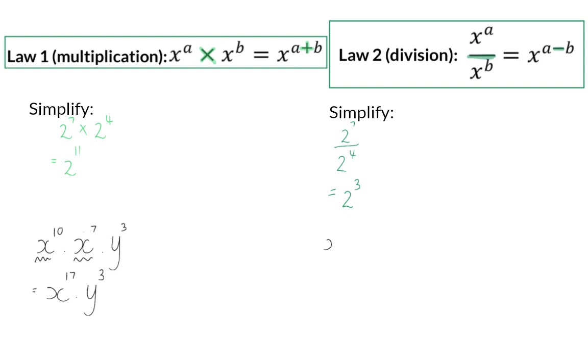When dividing variables, we can use the second law. So here, when we divide, the base still stays the same and we subtract the exponents. So now it's important to remember that that bottom base has an exponent of 1, so here we will say 7 minus 1 is 6.